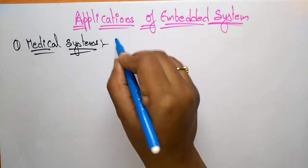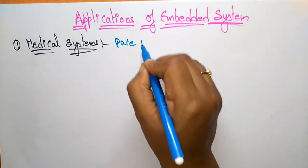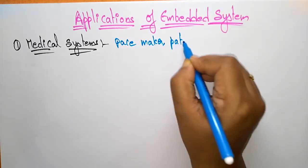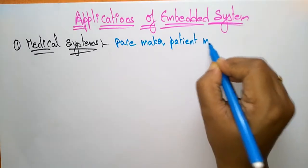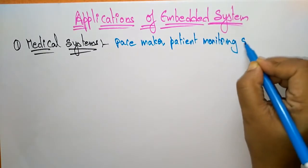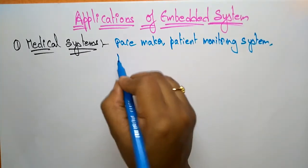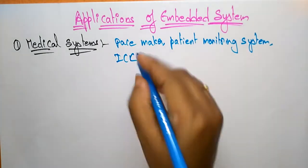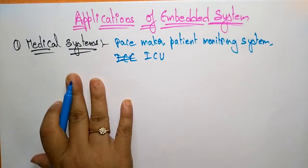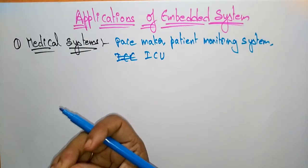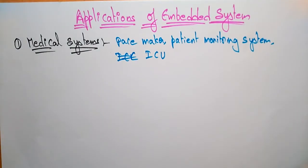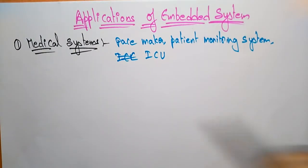In medical systems we use embedded systems in devices like pacemakers, patient monitoring systems — which are present above the bed in wards — and in ICUs. So in the field of medical systems: pacemakers, patient monitoring systems, and ICUs all use embedded systems.